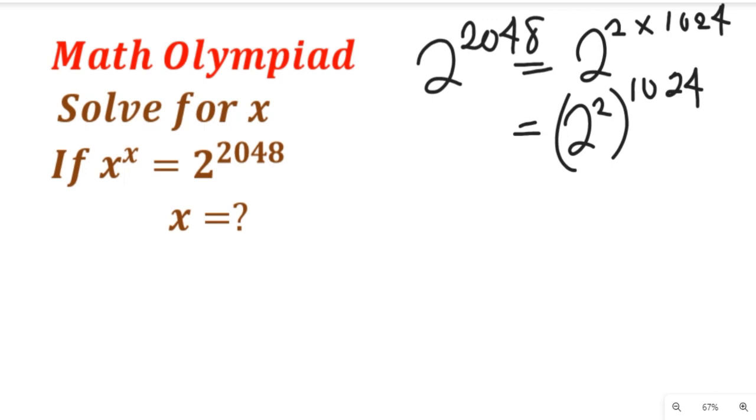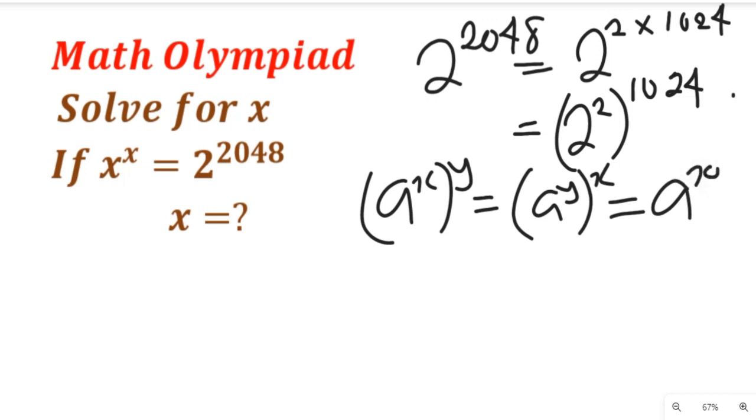Now remember that law of indices that if you have these two powers, this can multiply this and this can also come in. So it's a simple law in indices. If we have a to the power of x multiplied by y, it can still be equal to a to the power of y multiplied by x. And both of these can be a to the power of xy. This is just a reminder of that principle.